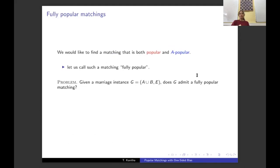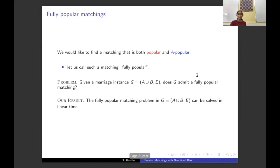We would like to find a popular matching that is also A-popular. There can be exponentially many popular matchings in the given instance G, and since we want to give vertices in A more importance among these, we would like to know if there is one that's also A-popular. We call a matching that is both popular and A-popular fully popular. The problem we consider is: does the given instance G admit a fully popular matching, and if so, find one? We show a linear time algorithm to solve this problem.